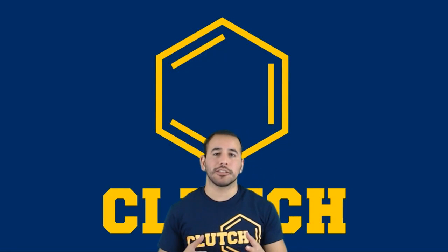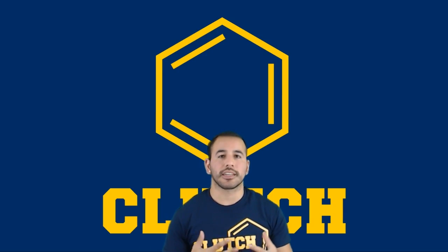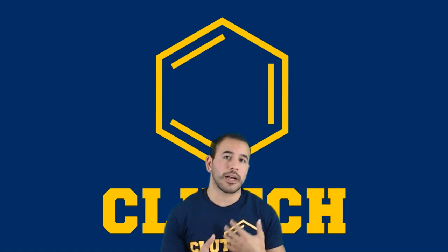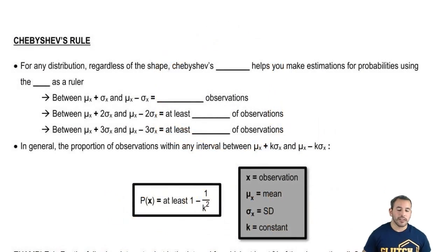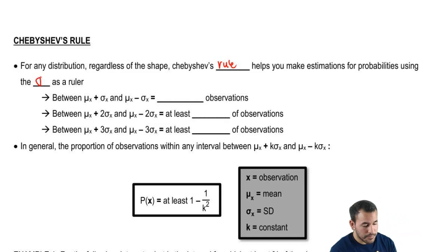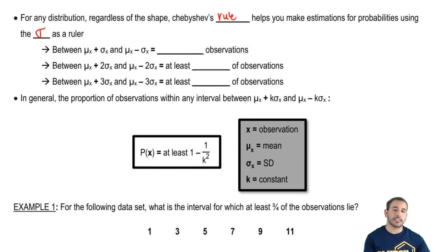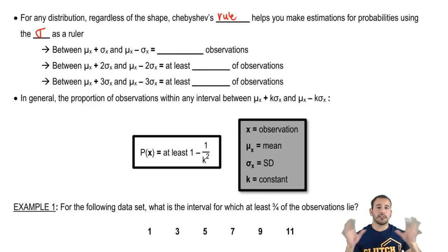Hey guys, so last time we talked about one of the continuous random variables, and now we're going to focus on one concept that most books cover a little earlier, but I'd like to touch upon it later once we have a better understanding of standard deviations. That's going to be Chebyshev's Rule — for any distribution, regardless of the shape.